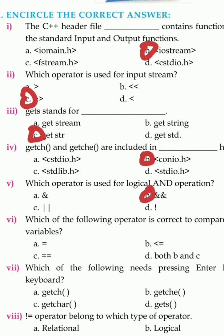Question 6: Which of the following operators is correct to compare two values of a variable? When we are comparing two variables, option A is single equals (=), option B is less than or equal to (<=), option C is double equals (==), option D is both B and C. The answer is option C — double equals (==).